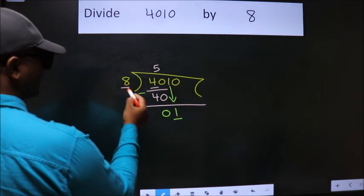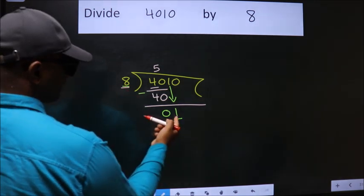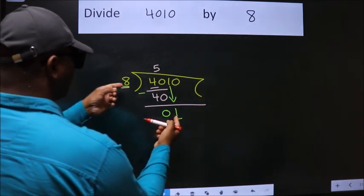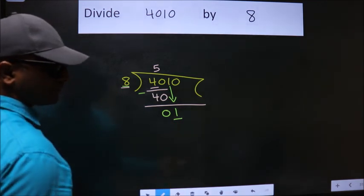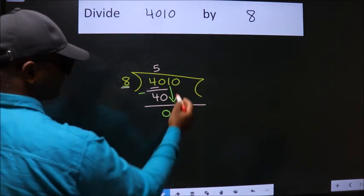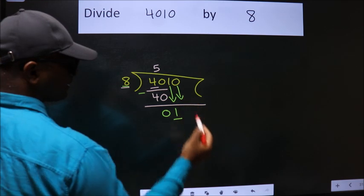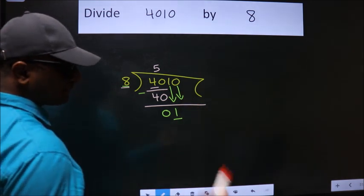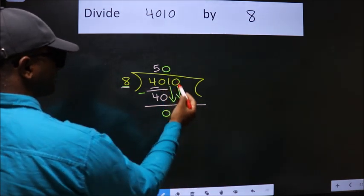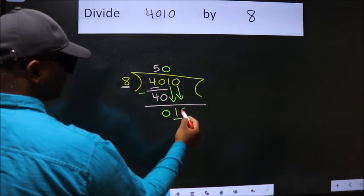Here we have 1, here 8. 1 is smaller than 8, so we should bring down the second number. And the rule to bring down second number is put 0 here. Then only we can bring down this number.